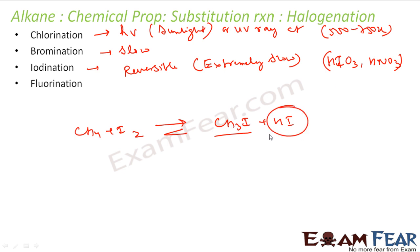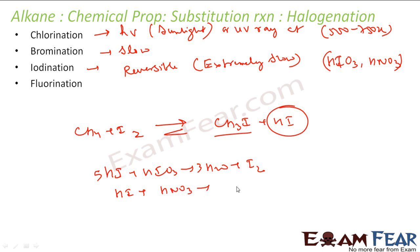The oxidizing agent converts the HI formed in the reaction. If you react HI with HIO₃, you get CH₄ and I₂ — you can write the balanced reaction. Or when HI reacts with nitric acid, it gives water, NO₂, and I₂. So what happens is: if HI is consumed, the reaction proceeds in the forward direction. The reason we add the oxidizing agent is that it consumes the HI, pushing the reaction forward.